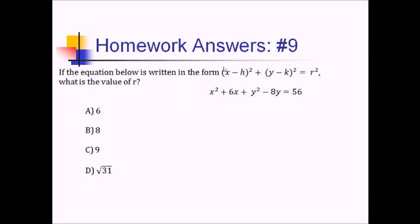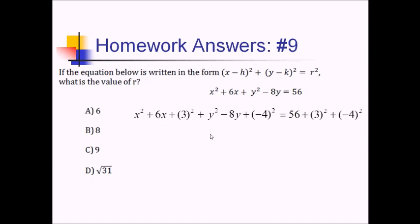For number 9, we want to know the value of r, so we complete the square for x and y to put this in center-radius form. For x: half of 6 is 3, so we add 3² = 9. For y: half of −8 is −4, so we add 4² = 16. Adding those to both sides: 56 + 9 + 16 = 81. Factoring the left side gives (x + 3)² + (y − 4)² = 81. So r = √81 = 9, which is choice C.